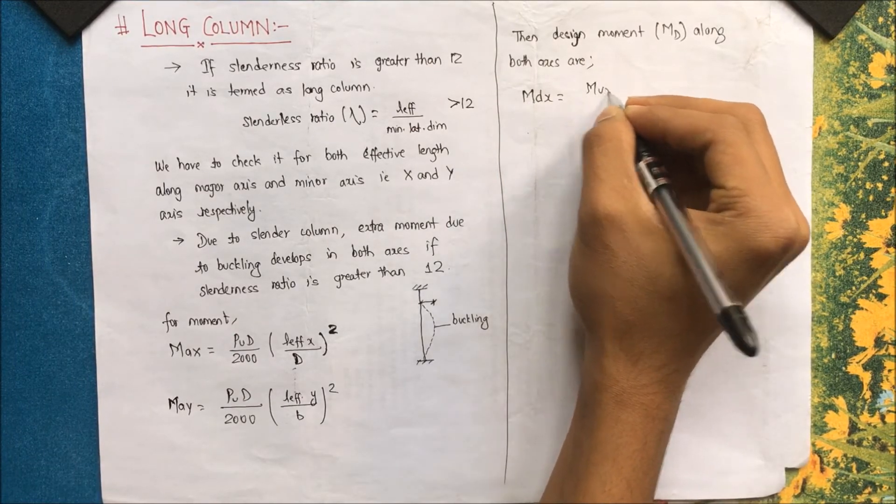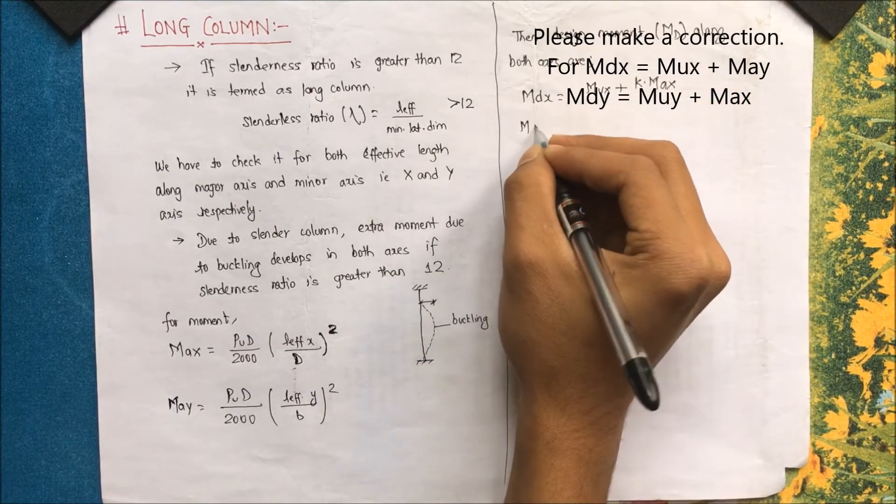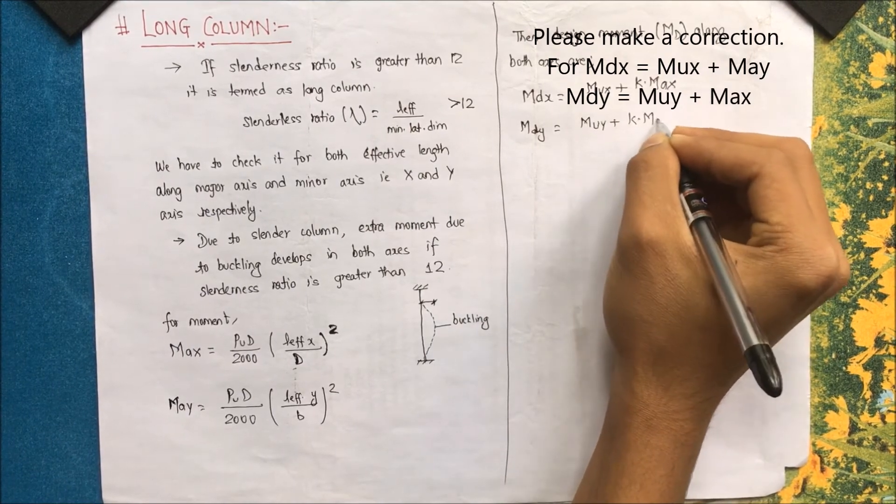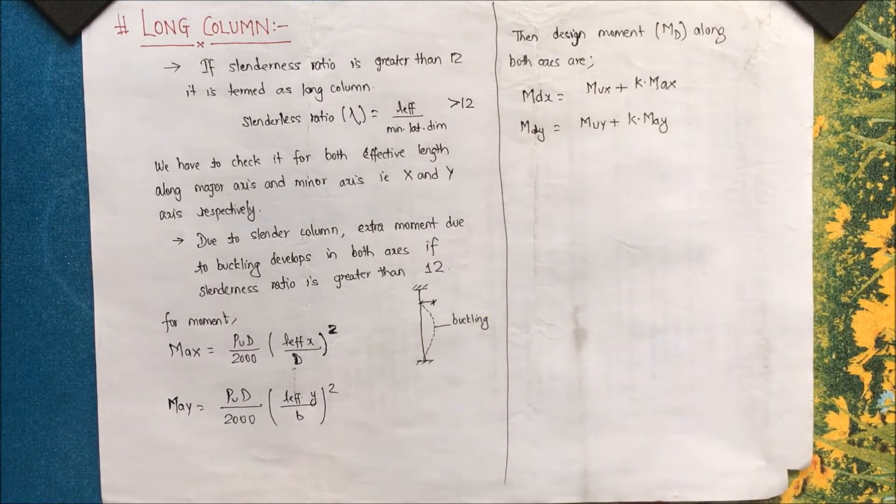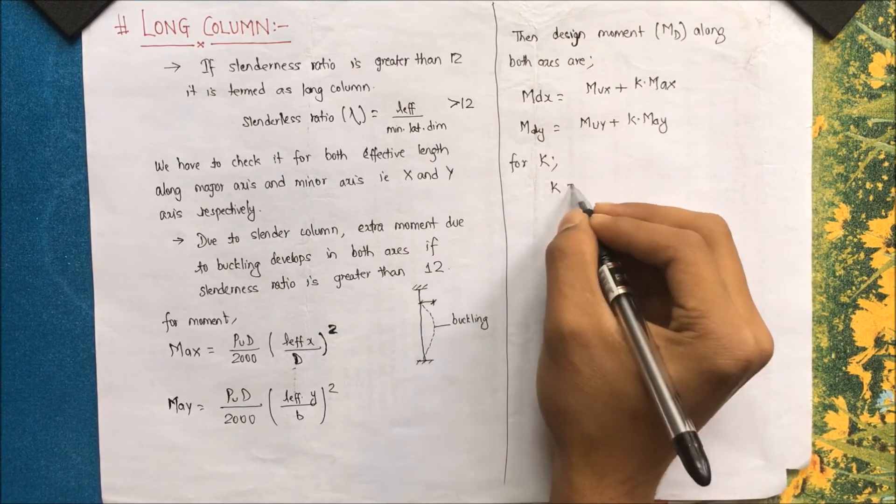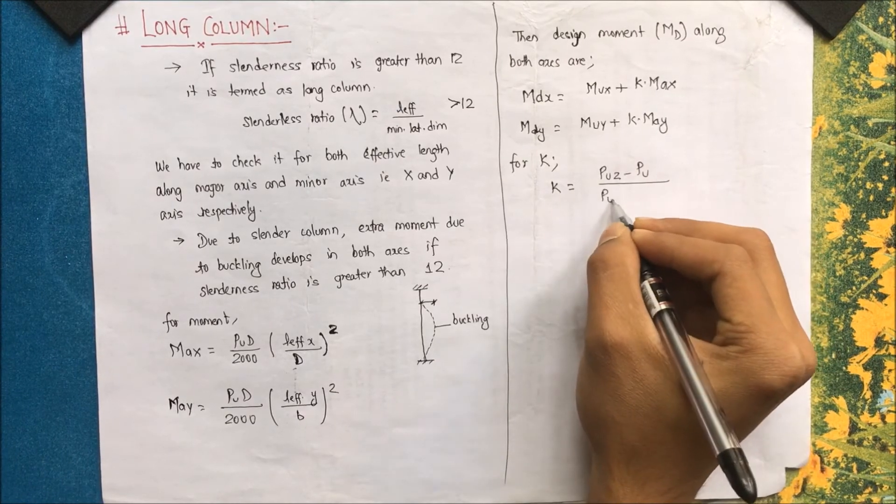So M_ux plus k into M_ay, and M_dy is equal to M_uy plus k into M_ax. You have to make sure that along M_dx you have M_ay and along M_dy you have M_ax. For k, k is a term which is obtained by using this relation.